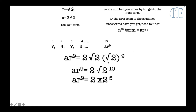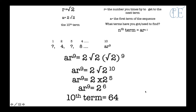So ar to the power of 9 equals 2 root 2 multiplied by the square root of 2 to the power of 9. If you put all of that into your calculator, you get 2 root 2 to the power of 10, which you can write as 2 times 2 to the power of 5, leaving you with 2 to the power of 6. So 2 times 2 times 2 times 2 times 2 times 2 gives a tenth term of 64.